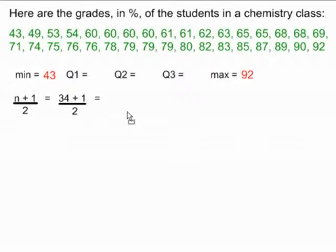34 plus 1, of course, is 35. And 35 divided by 2 is 17.5. Our median is the average of the 17th and 18th values in this set of data. The 17th value is this 69, and the 18th value is this 71. We average 69 and 71, and we get a q2 of 70. Our median is 70.